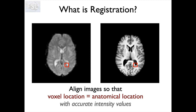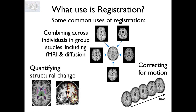We'll also see in a later video that it's important to take account of what that does to the intensities as well. We use registration whenever we have a group study — whenever we're looking at different individuals, we need to make sure we can align them so that we can take one particular location and have the same anatomy for all individuals, allowing us to make maps of what's happening in different locations within the brain. We also use it for correcting motion, which is very common in diffusion imaging or functional imaging, where if the subject is moving their head during acquisition the images are not aligned and we need to use registration to correct for that motion.